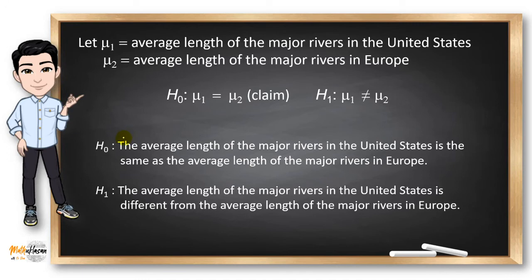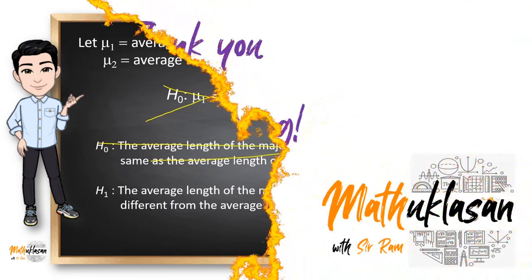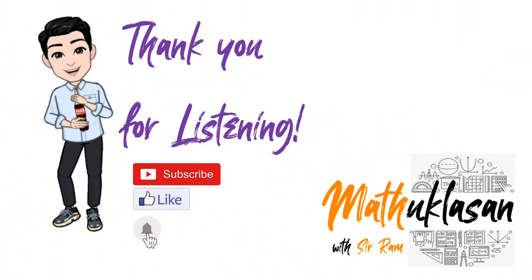Since the null hypothesis is not rejected, we retain it: the average length of major rivers in the United States is the same as the average length of major rivers in Europe — there is no significant difference between the two means. Therefore, we support the claim of the researcher. If you want more video discussions about hypothesis testing in Microsoft Excel, check the playlists in the description below. Thank you for listening and see you in the next video.